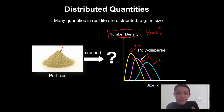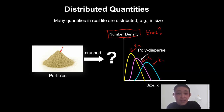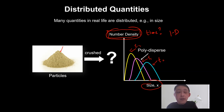This example talks about the dependence of number density on just size, so this is a one-dimensional population balance problem.